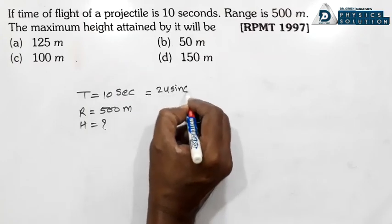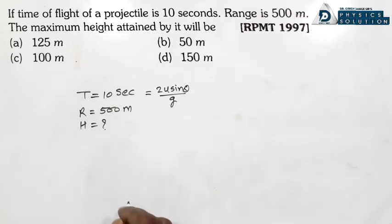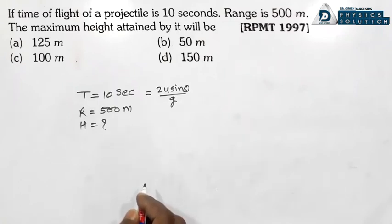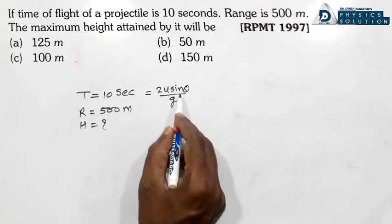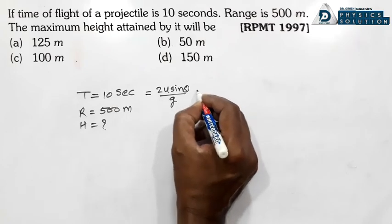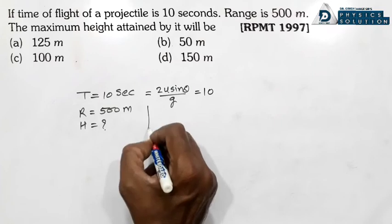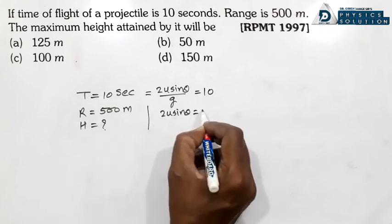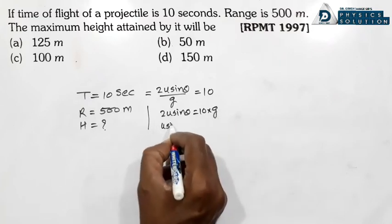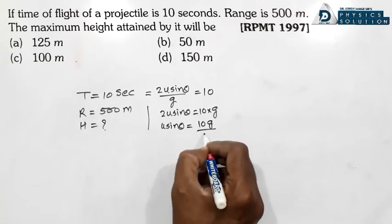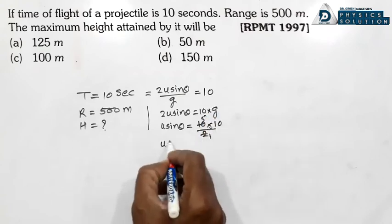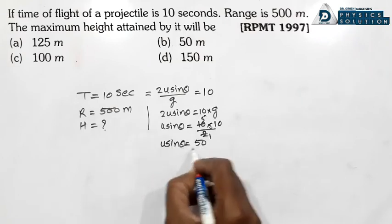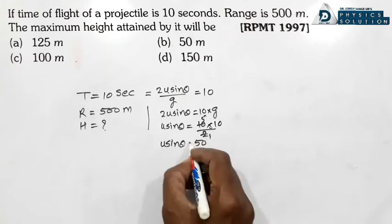Time of flight formula: T = 2u sinθ / g. T = 10 second diya hai. So 2u sinθ = 10g, therefore u sinθ = 10g/2 = 5g = 50 m/s.